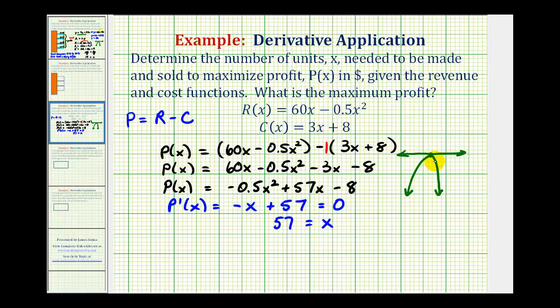The reason this is helpful is we now know that x equals 57, we do have the maximum profit. But remember, x is the number of units, so to maximize the profit, then we need to make and sell 57 items, or units.